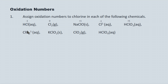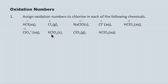Here are four more examples. First, oxygen is minus two with three of them for a total of minus six; the charge in the particle is one minus, so chlorine must be plus five. Next, oxygen is minus two with two of them for a total of minus four, and potassium is plus one, so chlorine must be plus three to balance to zero. Then, oxygen is minus two with two of them for a total of minus four, so chlorine must be plus four to balance to zero. Finally, oxygen is minus two with four of them for minus eight, and hydrogen is plus one, so chlorine must be plus seven to balance to zero.